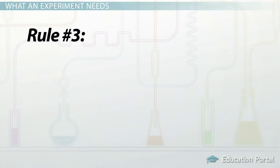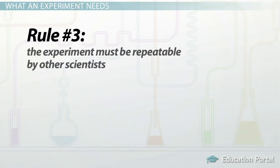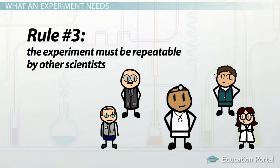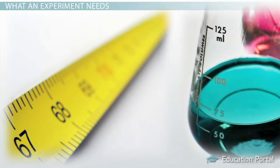The third rule for scientific investigations is that the experiment must be repeatable by other scientists. Peer reviewers want to make sure that other scientists can run the same experiment and get similar results. This is one of the reasons we standardize our measuring tools and equipment.